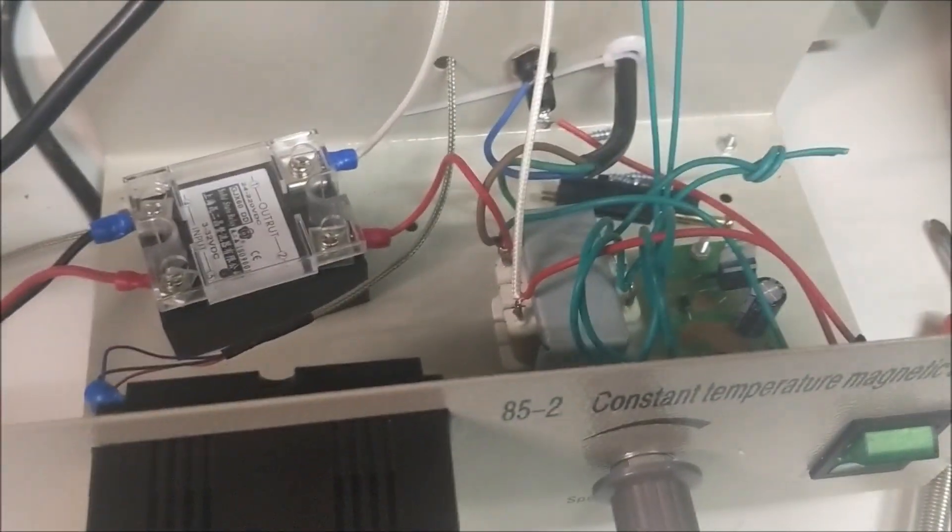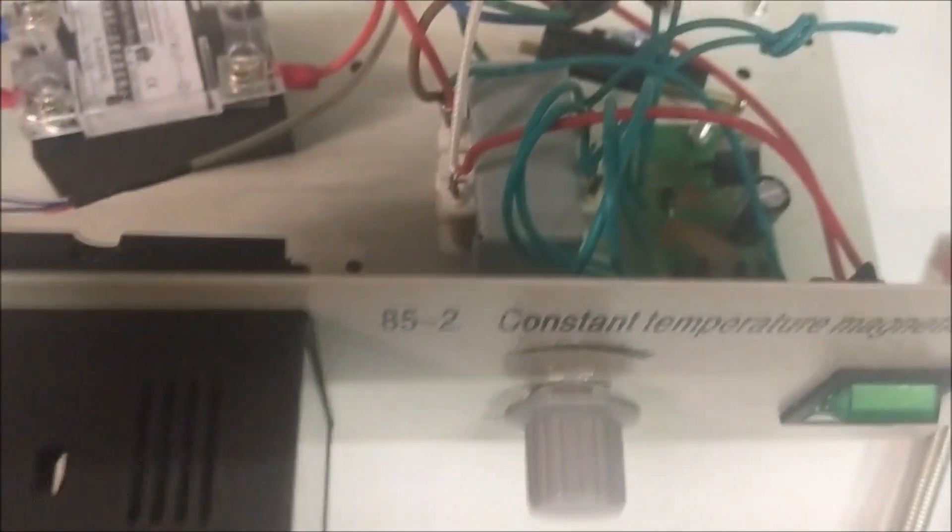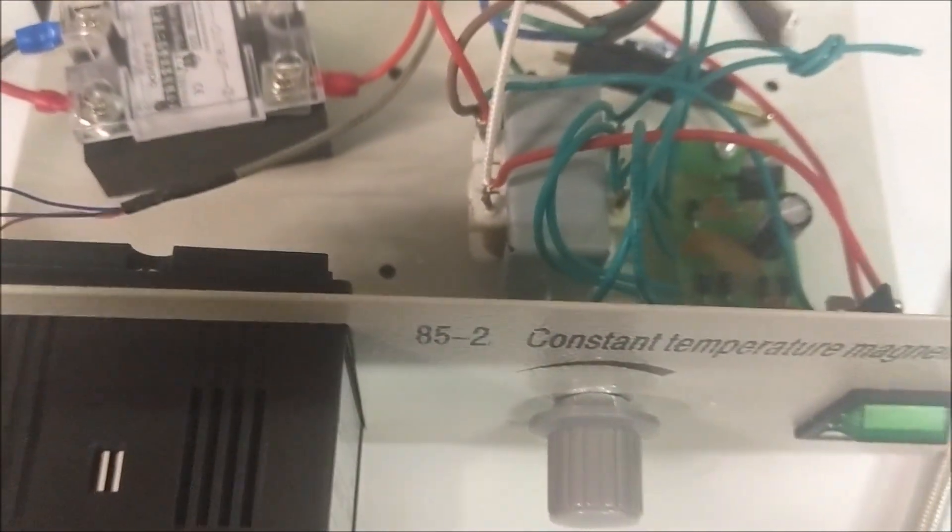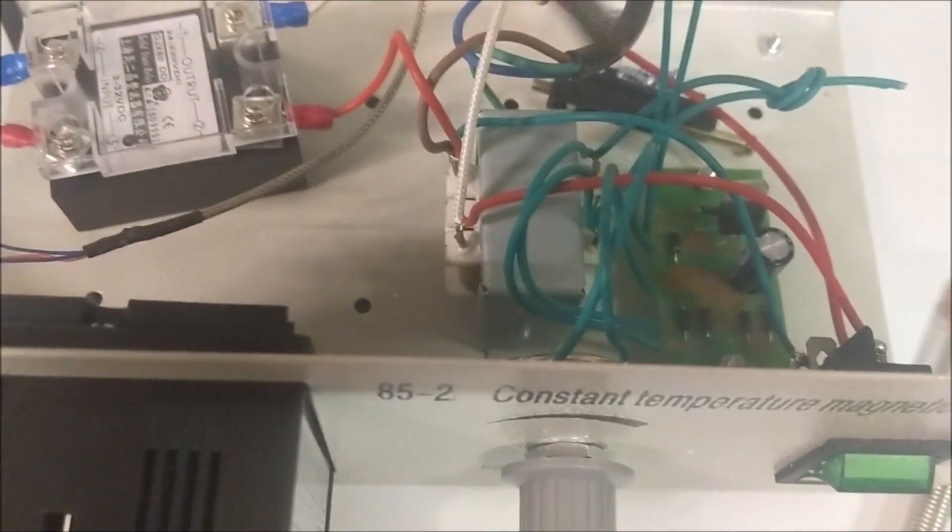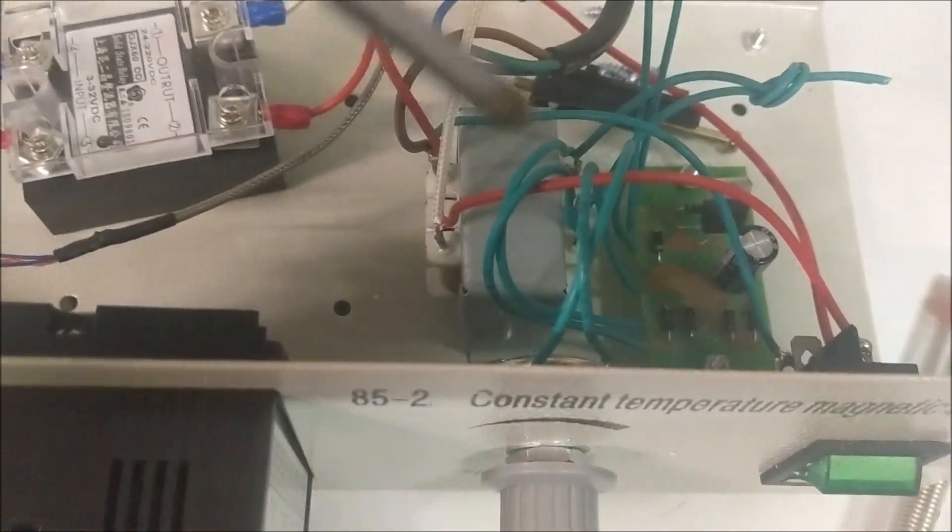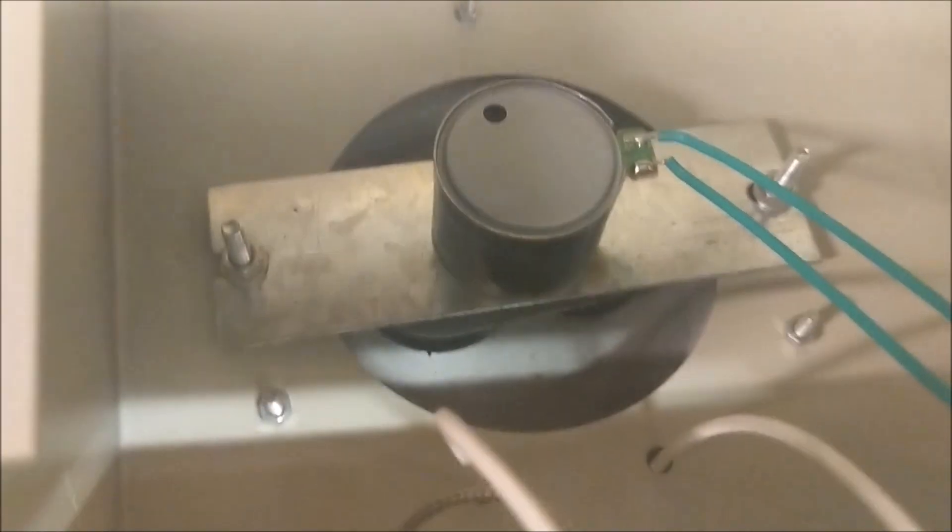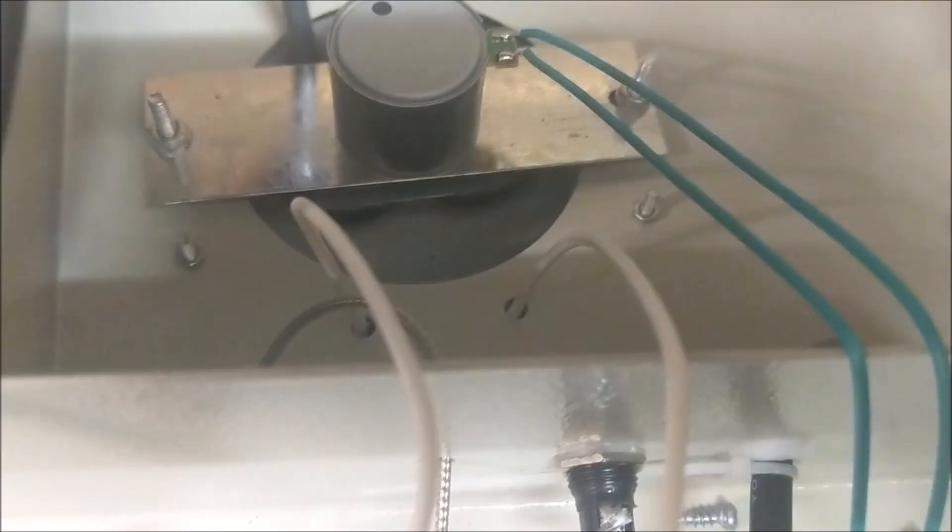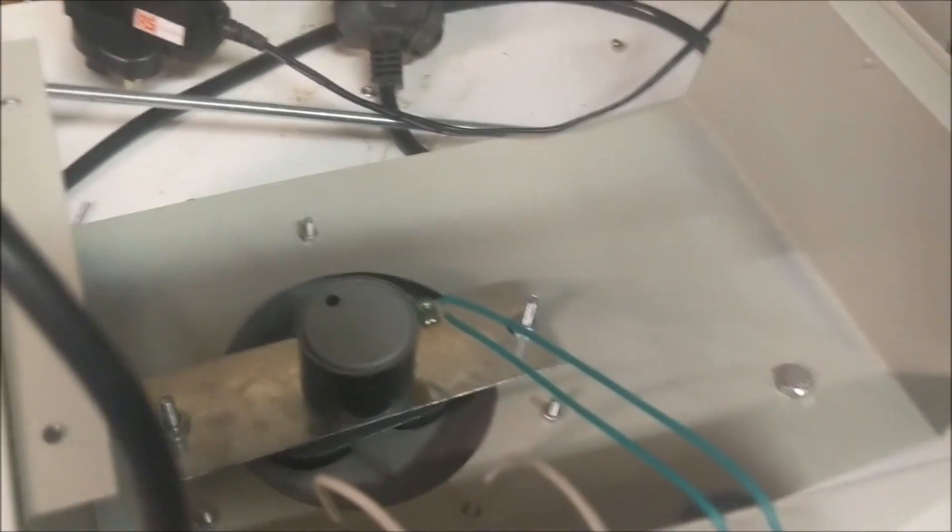If we look inside here, our power comes in, goes through this transformer, and all this side was done in really obvious green wires to make it easy to tell what's going on. That's controlling the motor up here which spins the magnets, which you can see down there wobbling to and fro. That side should still be all the same.